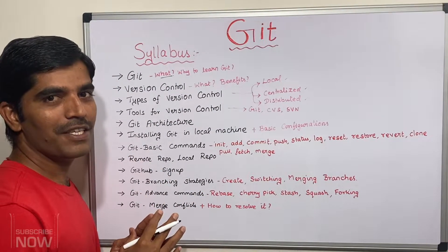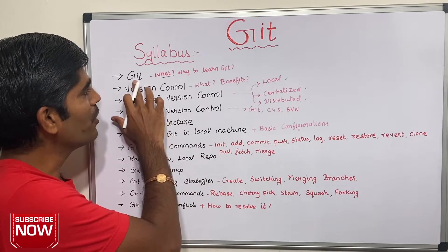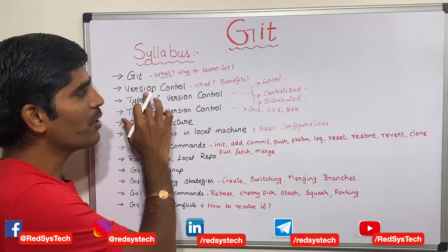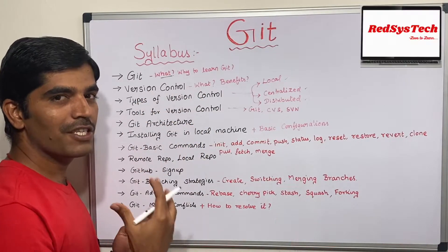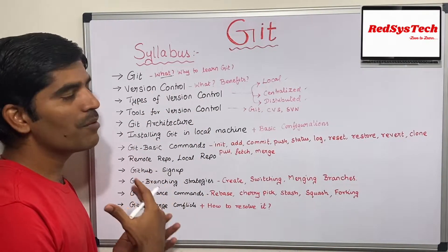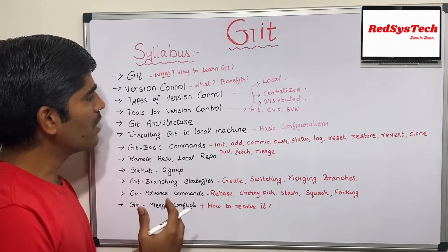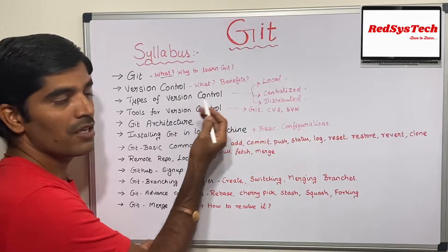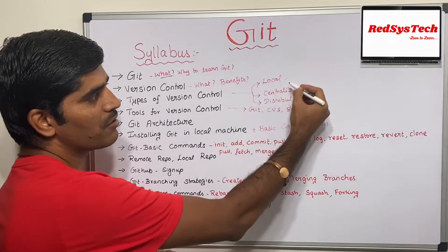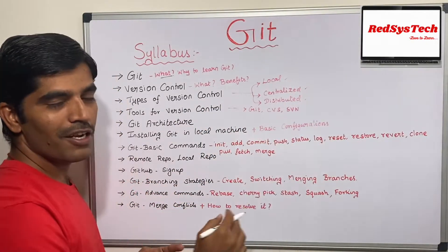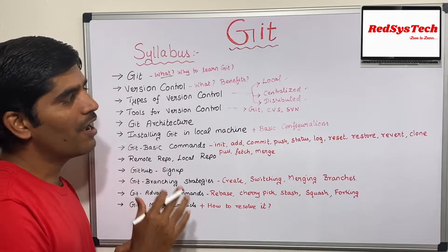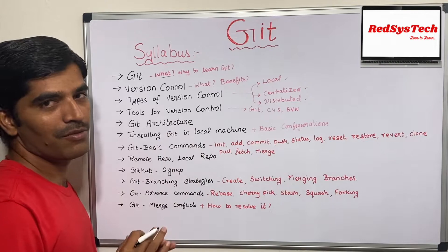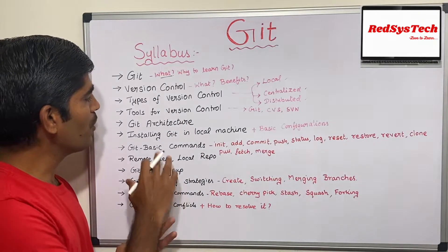Let's get started with the syllabus. First, we are going to learn what Git is and why we need to learn it. Second, we are going to learn what we mean by version control system and what benefits we get from it. Third, we are going to learn about the different types of version controls — local, centralized, and distributed — and understand what the difference is between all three and where Git fits in this category.